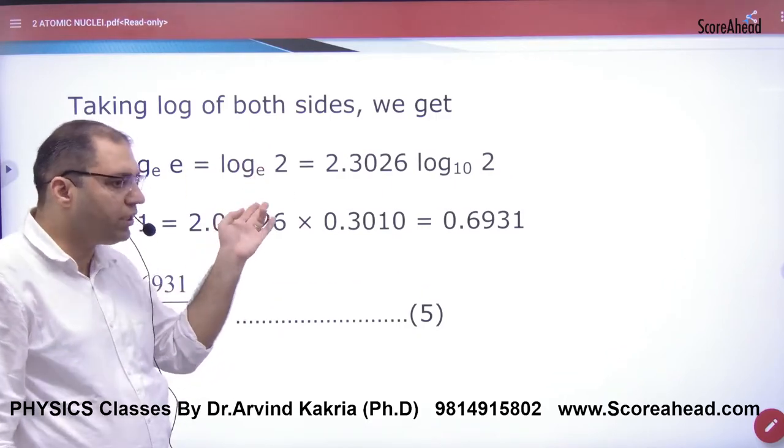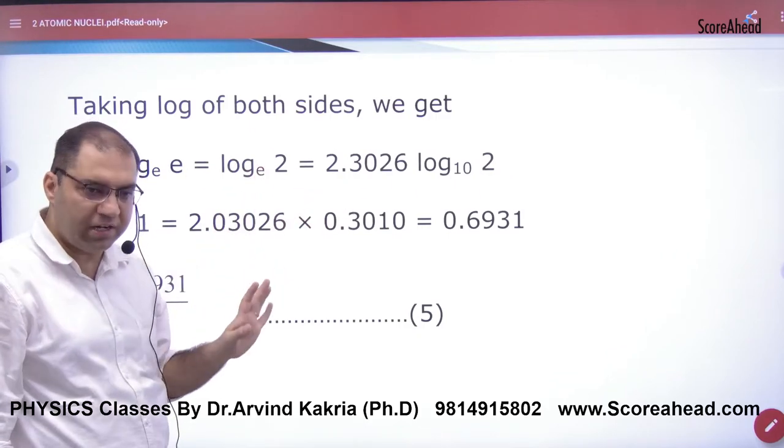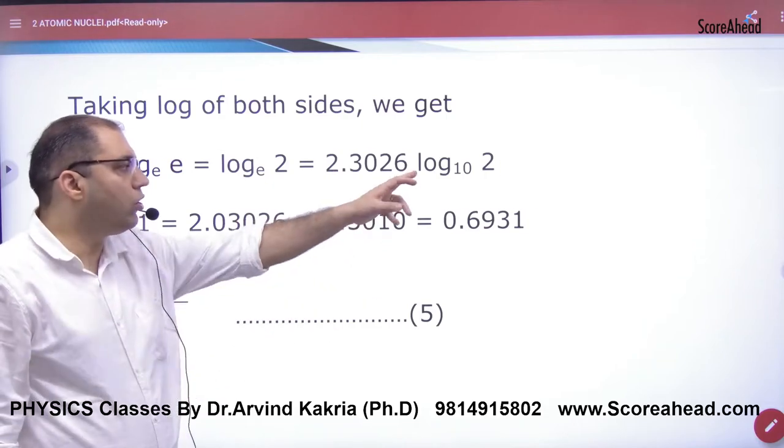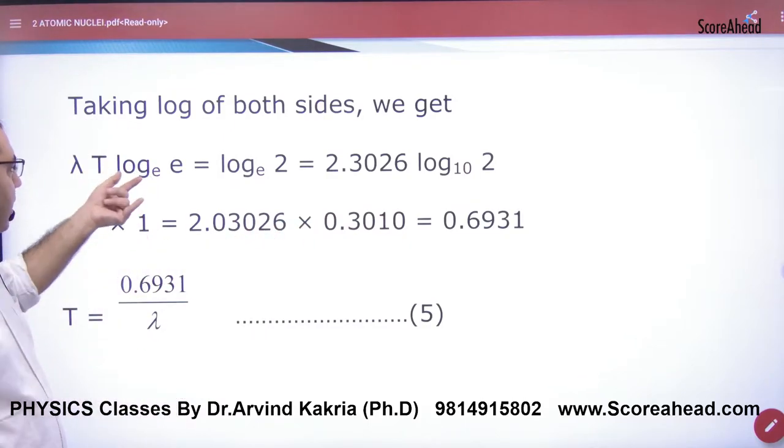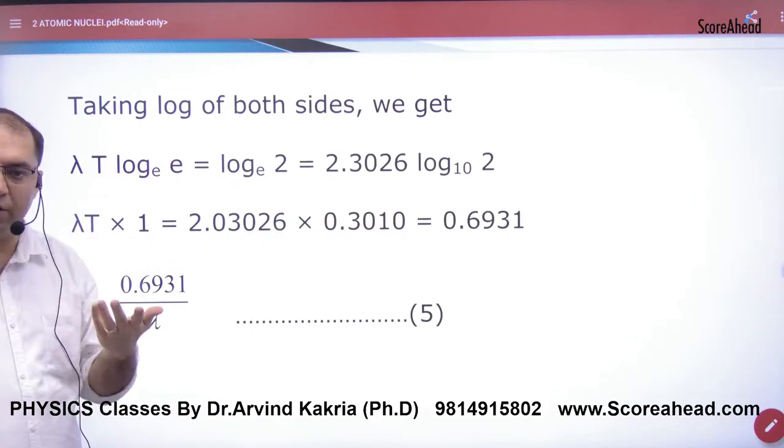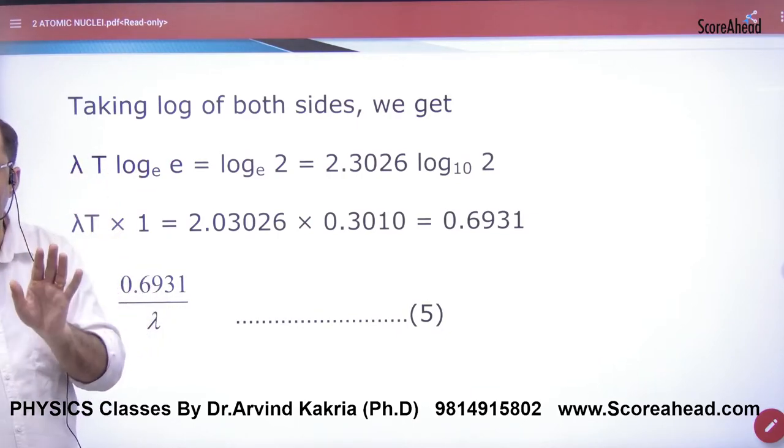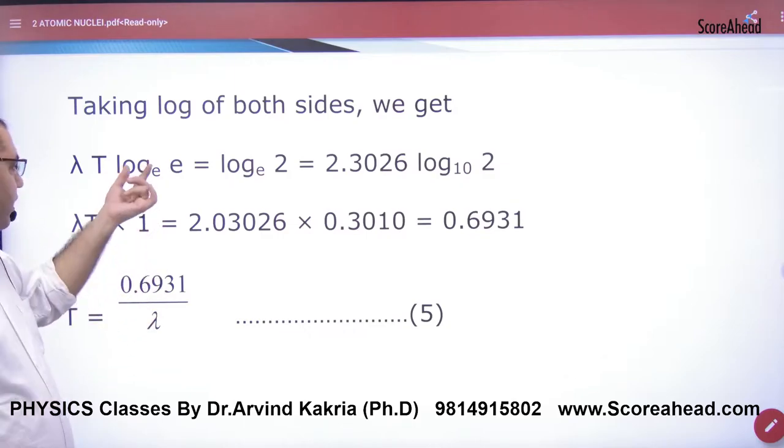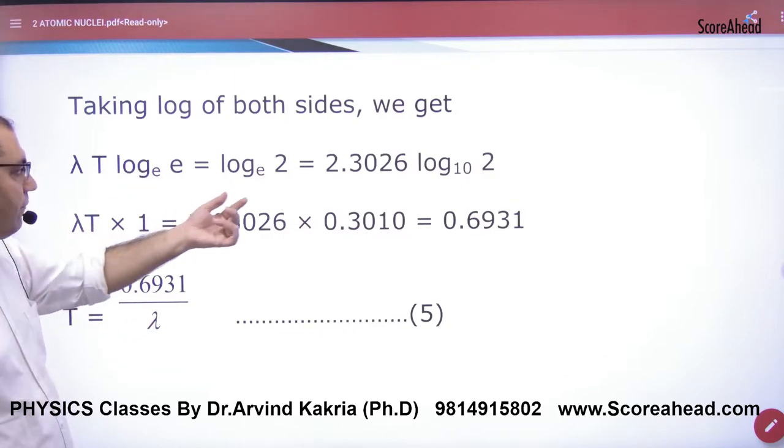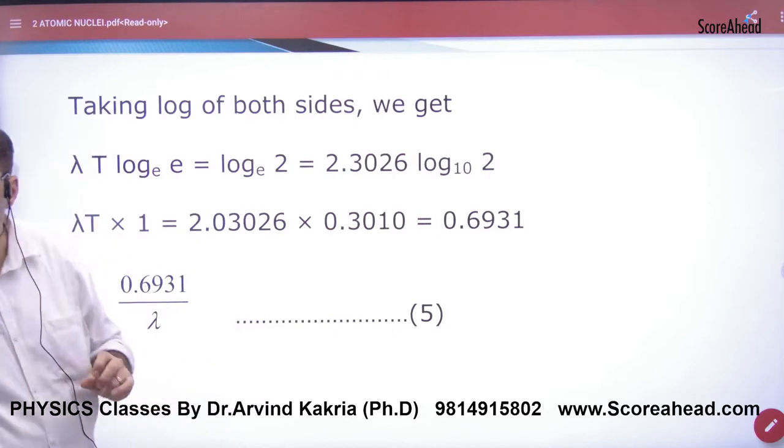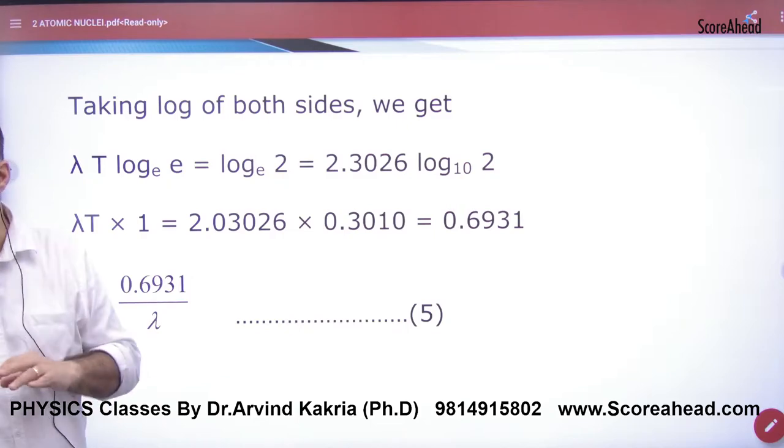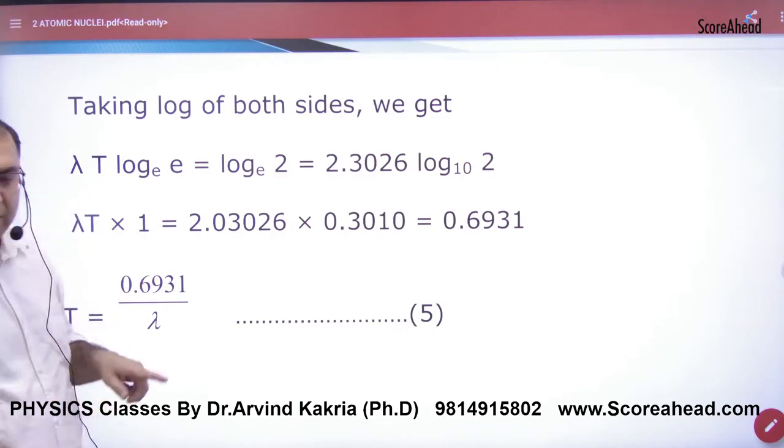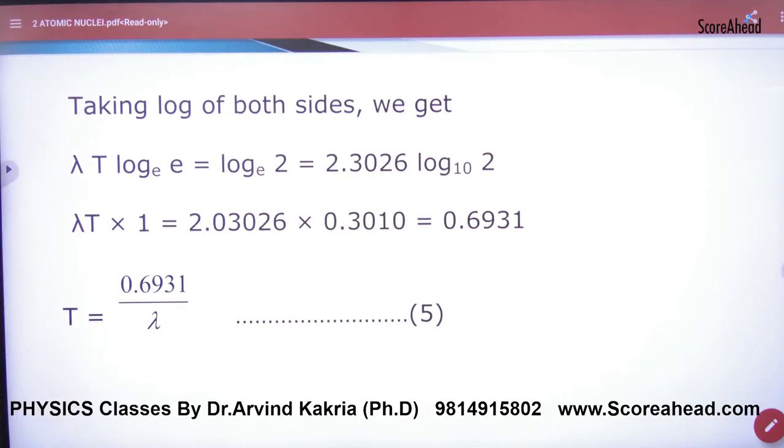Log of 2 to the base e, if you want to make 10, then 2.303 approximately multiply, this is the rule. And log 2 to the base 10, that is 0.3010, so you have to remember. Here log of e to the base e, this is 1. If the base is the same, then answer is 1. So lambda into T, you will multiply, so 0.6931. T will be 0.6931 by lambda. So this formula mark: half-life period, T is 0.6931 by lambda.